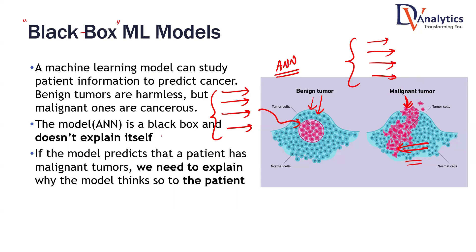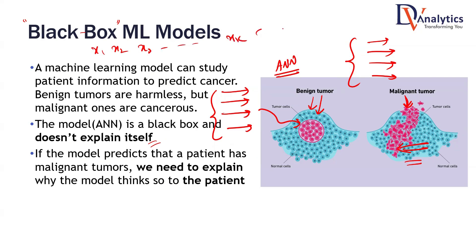If the model is a black box model, it doesn't explain itself. We will not get these kinds of results where we can say these are the factors that are influencing it. We will just get the predicted value with high accuracy, and that is it. We cannot really see the impact of each and every individual variable. You have used key features for the prediction of the target variable Y. You can make a good prediction about Y, but you cannot really tell which of these features are impacting Y.